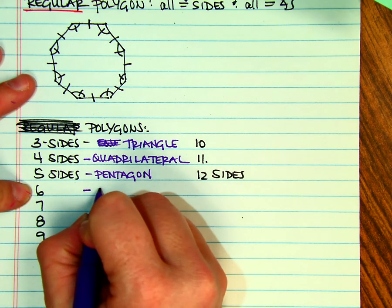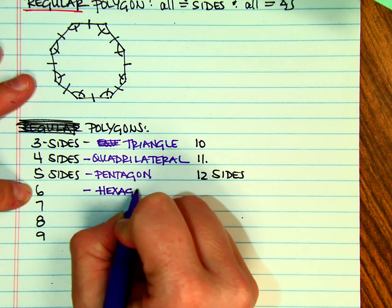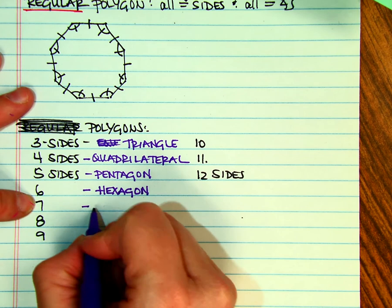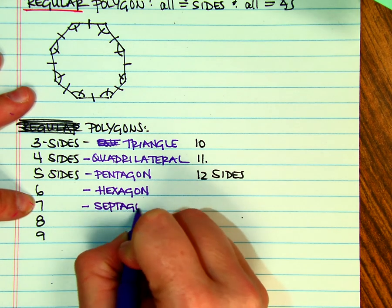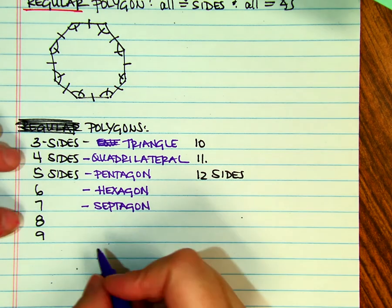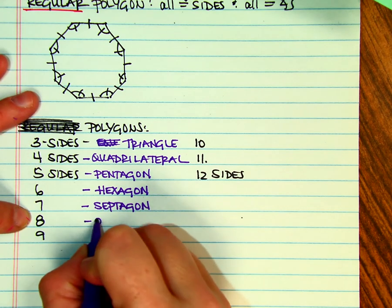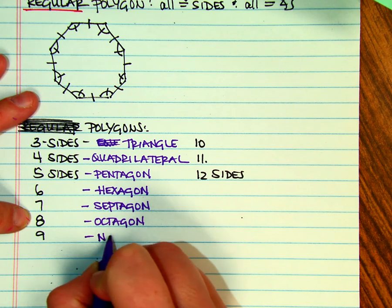Six is called a hexagon. Seven is called a septagon, and that one kind of varies. You might see seven written with a different word like heptagon as well. Eight is an octagon. Nine is a nonagon.